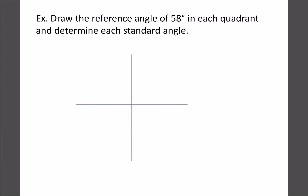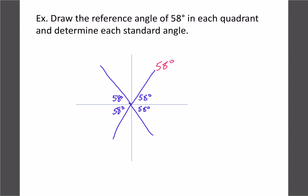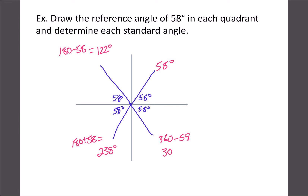Let's draw the reference angle of 58 in each quadrant — remember it's always between the x-axis and the line. So we'd have 58 in all four quadrants. Now let's calculate the actual standard angles: quadrant one stays 58; quadrant two is 180 minus 58, which gives us 122; quadrant three is 180 plus 58, giving us 238; and quadrant four is 360 minus 58, giving us 302. All four of those angles have the exact same reference angle.